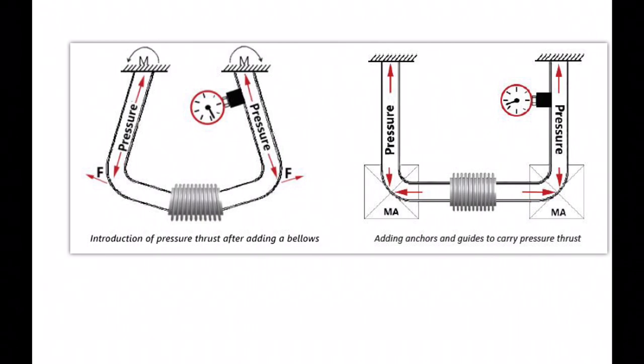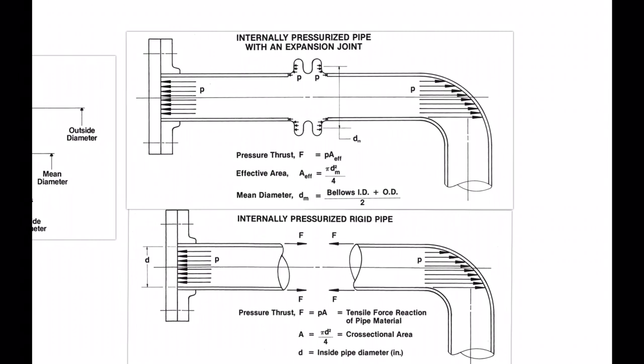In the second example as well, we are introducing a bellow as shown here. Earlier this particular F was simply pressure times the cross-sectional area, but now since we have introduced an expansion joint, the area is slightly modified. This dm corresponds to the mean diameter. So there is an extra load because of the bellow convolution. Let us look into that form in more detail.